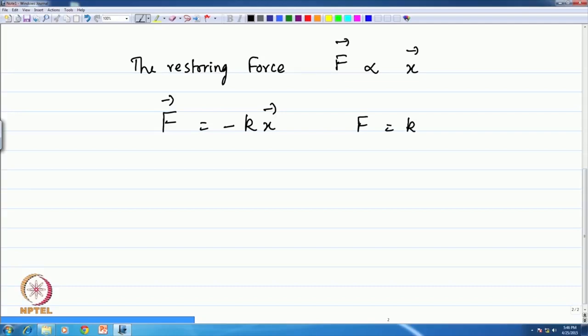We do not need to worry about the vector arrow here, but F is the negative derivative of potential with respect to the position coordinate. This is equal to k x, and you can see therefore, the potential energy V of x is - with a minus k x. Therefore, V of x is the integral k x dx which gives you k x square by 2 plus a constant.